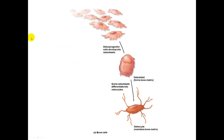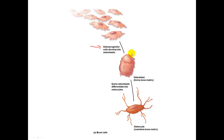Here is a figure showing the development of bone cells. They start out as osteoprogenitor cells, which are stem cells derived from the mesenchyme during development. They are present in the endosteum and periosteum of a bone and can develop into osteoblasts or osteoclasts.